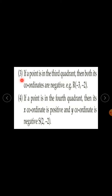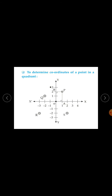Third point: if a point is in the third quadrant, then both its coordinates are negative. If a point is in the third quadrant, then both its coordinates are negative.